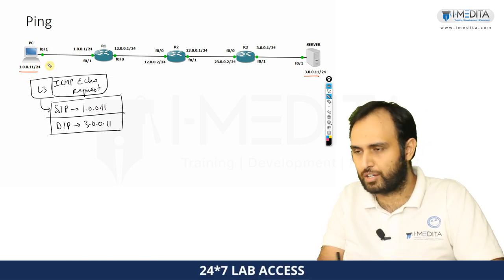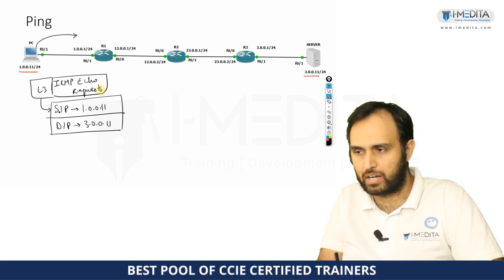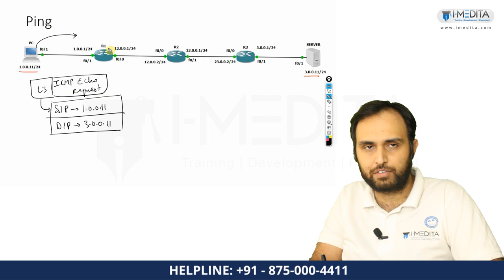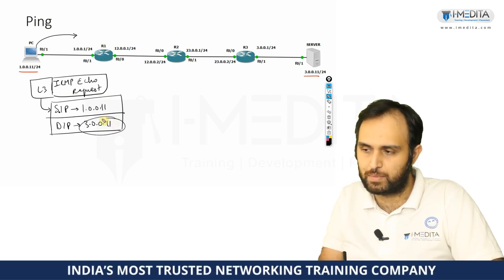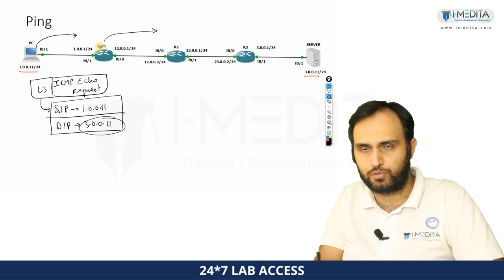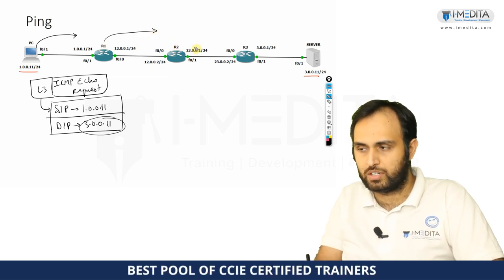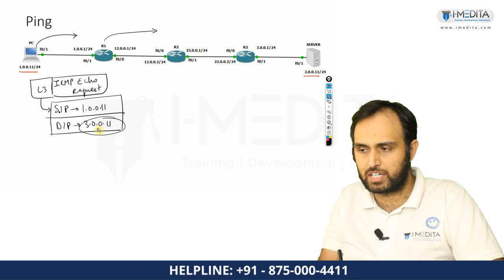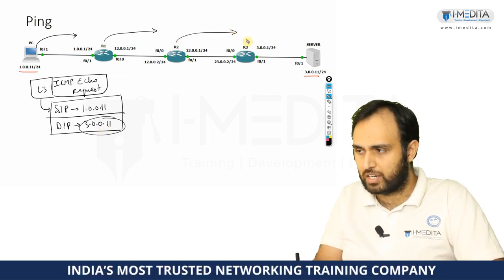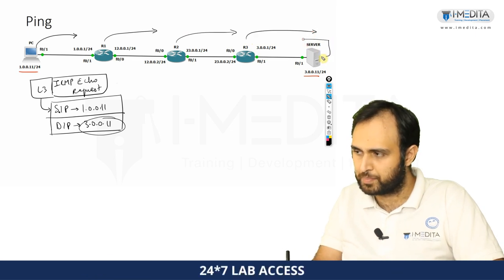The PC is going to send the ICMP echo request packet. R1 looks at the destination IP address, looks up in the routing table, and routes it out further to R2. Similarly, R2 looks at its routing table, checks the destination IP address, and routes it further until the packet finally reaches the server.